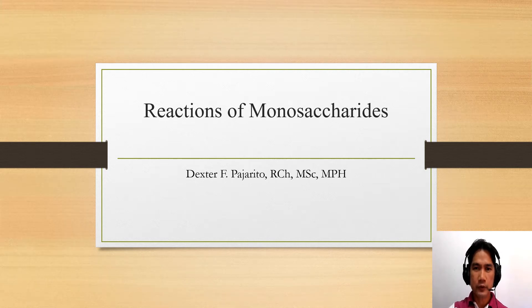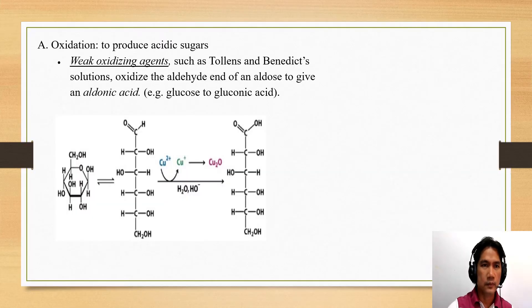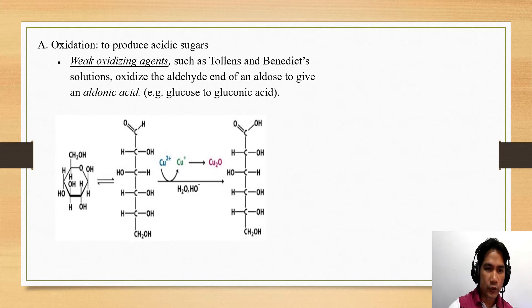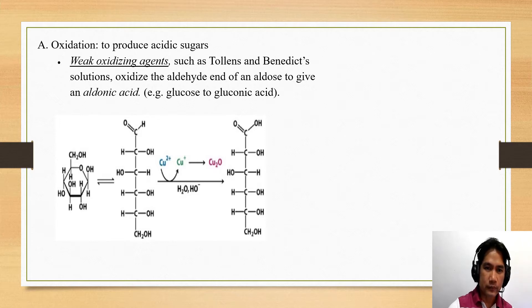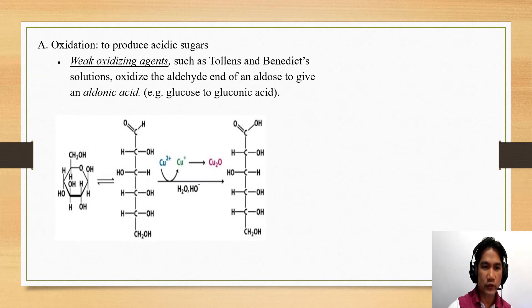Hello everyone, welcome to this video, which I will be talking about the reactions of monosaccharides. In today's presentation, we will see the different oxidation processes that a sugar, particularly a monosaccharide, could undergo. We have a Haworth or cyclic form of monosaccharide and a Fischer form of monosaccharide. A Fischer form is the open chain projection while a Haworth form is a closed chain or cyclic form.